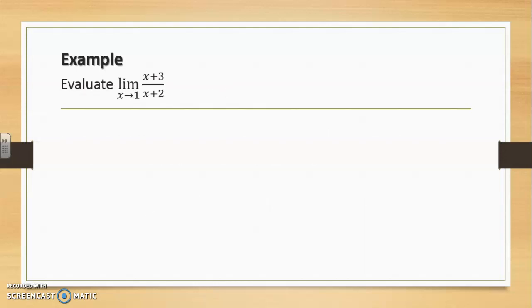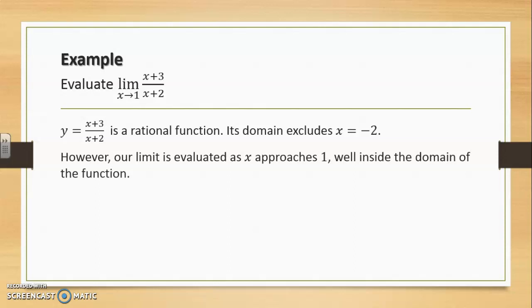As a second example, let's evaluate the limit as x approaches 1 of x plus 3 over x plus 2. The function whose limit we are computing is a rational function, and in this case, the domain excludes x equals minus 2, which would cause a division by 0. However, the limit we are performing is evaluated as x approaches 1, which is well inside the domain of the function.